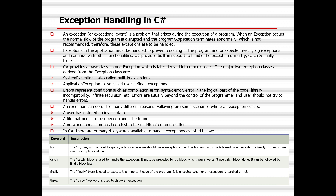Exceptions can occur for many different reasons. Here are some scenarios where an exception can occur: the user has entered invalid data, a file that needs to be opened cannot be found, or a network connection has been lost in the middle of communication. These are the different scenarios or reasons for which an exception might be triggered in C#.